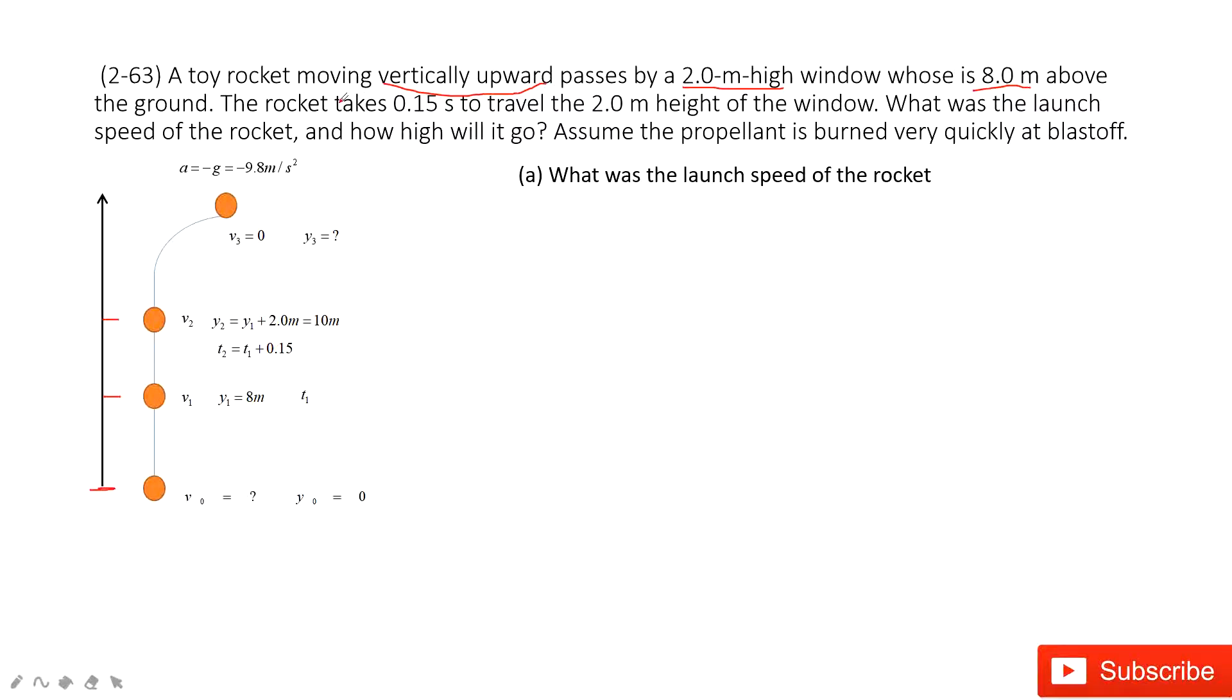The time taking for the rocket to travel the 2 meters height of the window is 0.15 seconds. So the time T2 should be T1 plus 0.15. Then the rocket keeps going. When it comes to the peak, we can see the velocity at the peak is 0. The position we don't know yet and we want to find.